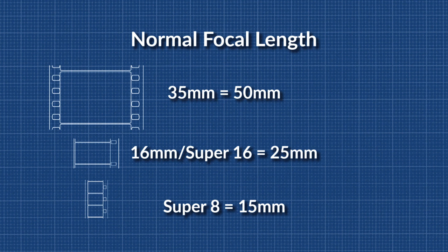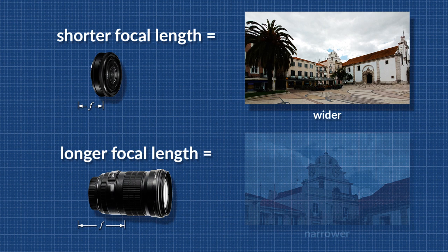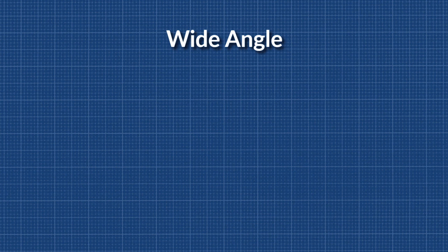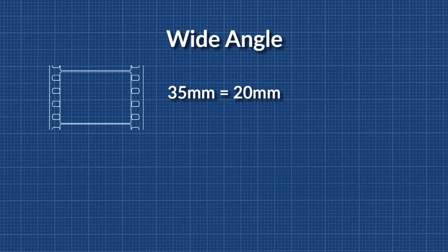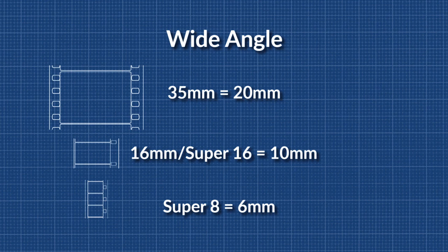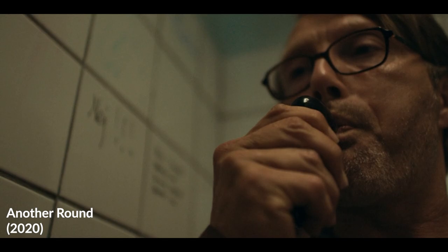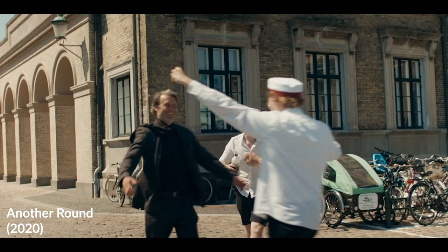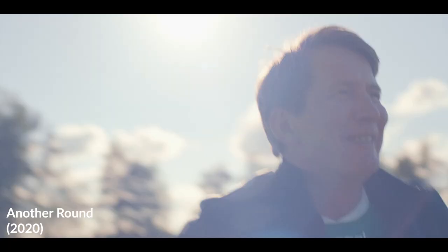Shorter focal length means a wider angle of view. Here are the focal lengths for a wide angle for each format. For 35mm formats, it's 20mm. For 16mm and Super 16, it's 10mm. For Super 8, it's 6mm. Keep these figures in mind, because wide angle lenses are often used in narrative films where you want to get close to the actors, shoot in tight spaces, have a deeper depth of field, and more freedom for handheld shooting.